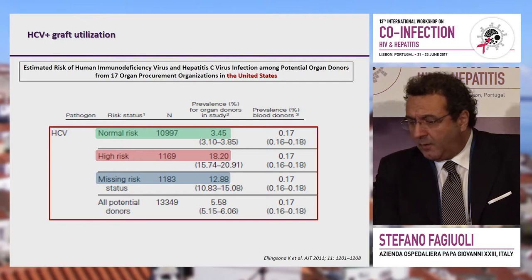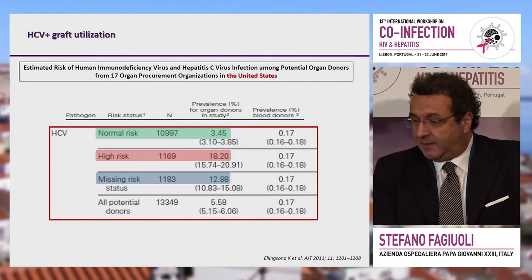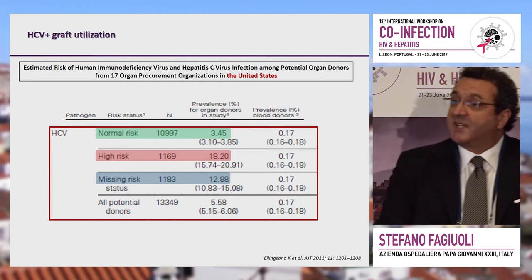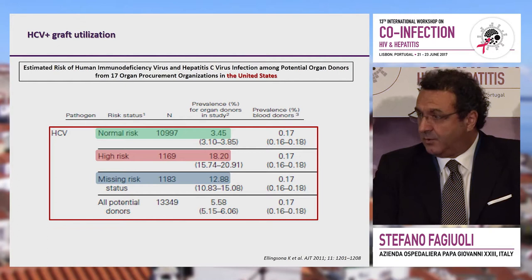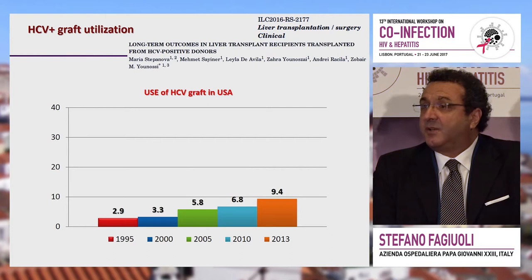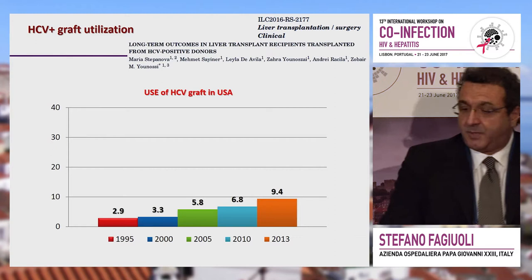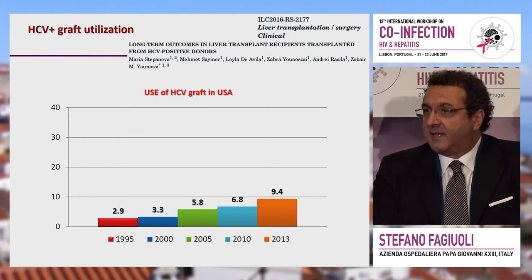A study shows that all potential donors are around 5.5% of the organ pool. Patients at low risk with no risk factors drop to 3.4%, but you can be as high as 18% in high-risk donors. There is a pool that can be used, and indeed in the last 15 to 20 years there has been an increase in use of those organs, especially in the United States.